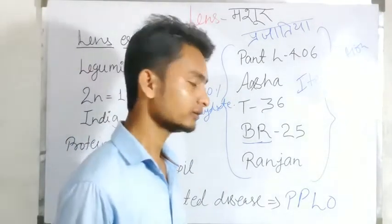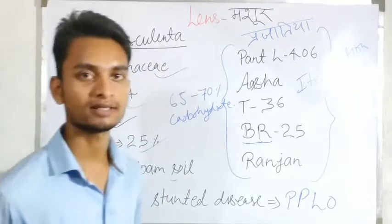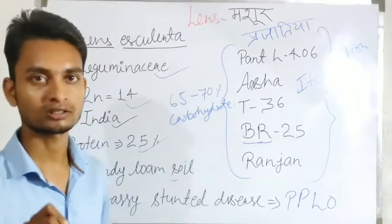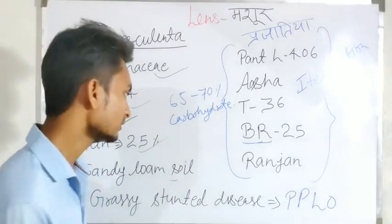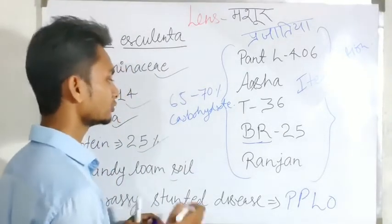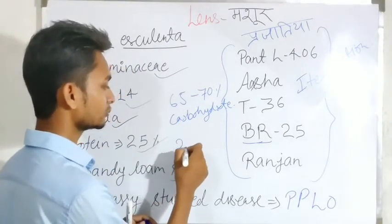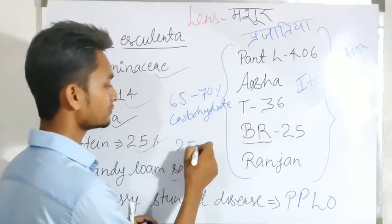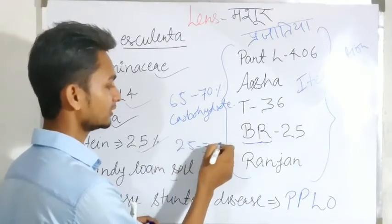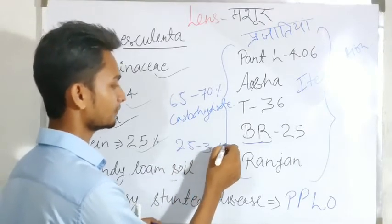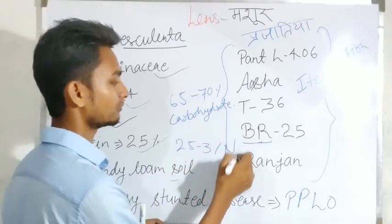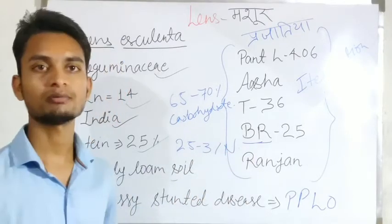This question was asked in the 2017 UP agricultural exam — the protein content in lentil seed is 2.503 percent.